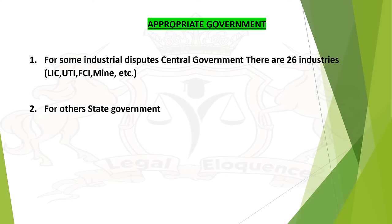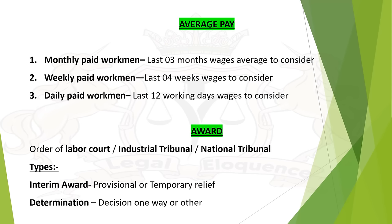Appropriate Government: For some industrial disputes, the Central Government acts as the appropriate government. There are 26 industries which the Central Government oversees — such as LIC, UTI, Food Corporation of India, Mines, etc. The remaining other industries are overseen by the State Government, which is the appropriate government for those. Average Pay: Monthly paid workmen — last 3 months' wages are considered. Weekly paid — last 4 weeks' wages. Daily paid — last 12 working days' wages. This is average pay.